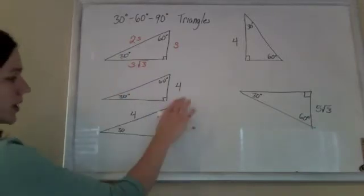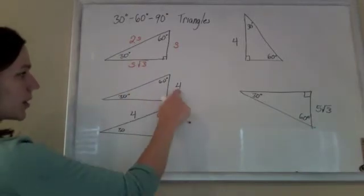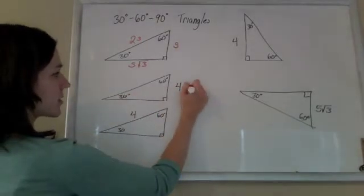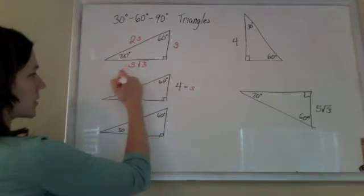So if I were given a 30-60-90 triangle, I look at what I'm given, and I like to label it right away. The one across from the 30 is the S, the one across from here is 2S, and the one across from the 60 is S root 3.